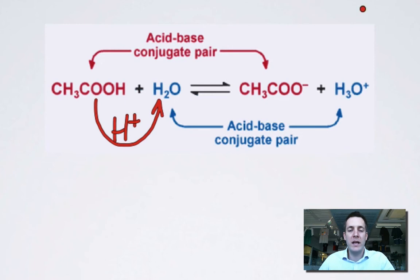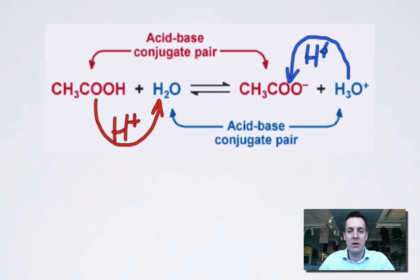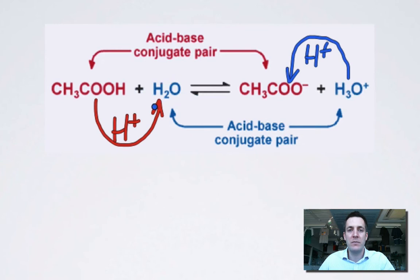A conjugate pair is two substances that differ by one H-plus. You can see that H-2O and H-3O-plus are also a conjugate pair because they differ by one H-plus. If we look at the backward reaction, where H-3O-plus is able to give H-plus to the ethanoate ion, we can see that H-3O-plus can act as an acid, and in doing so it will turn into H-2O, which acts as a base. Similarly, ethanoic acid can act as an acid and give H-plus away, and the ethanoate ion can act as a base and accept H-plus. So this is the conjugate acid in that pair, and this is the conjugate base. Conjugate pairs differ by one H-plus; the acid can give H-plus away, and the base can accept H-plus.